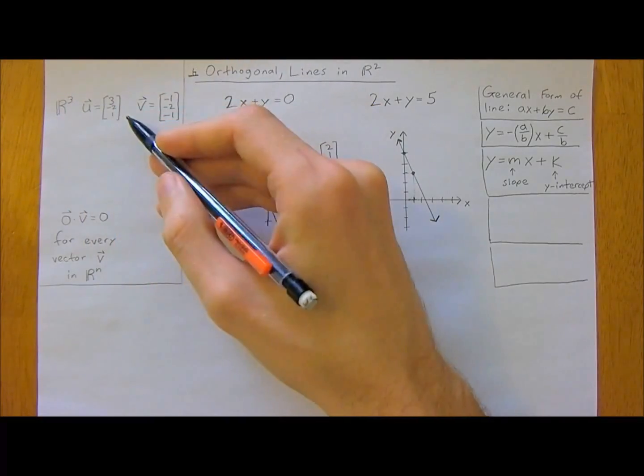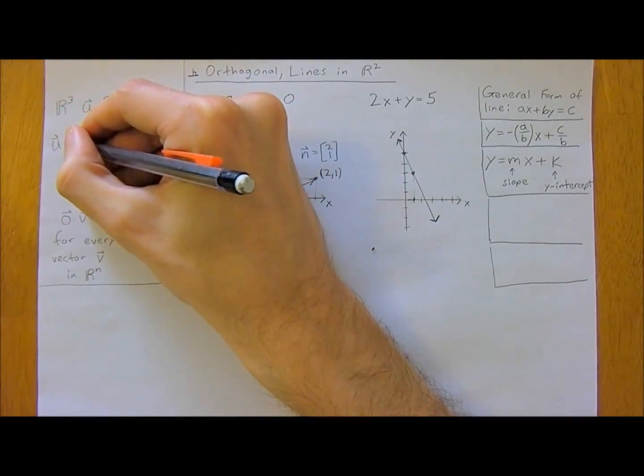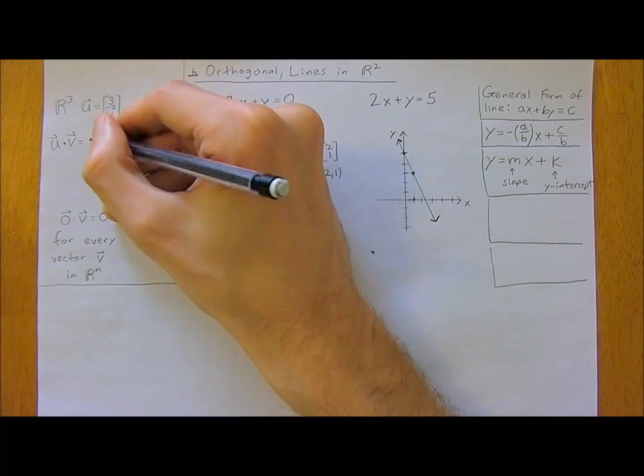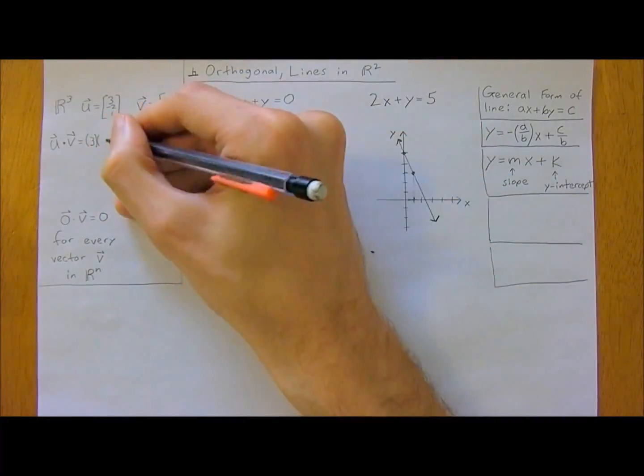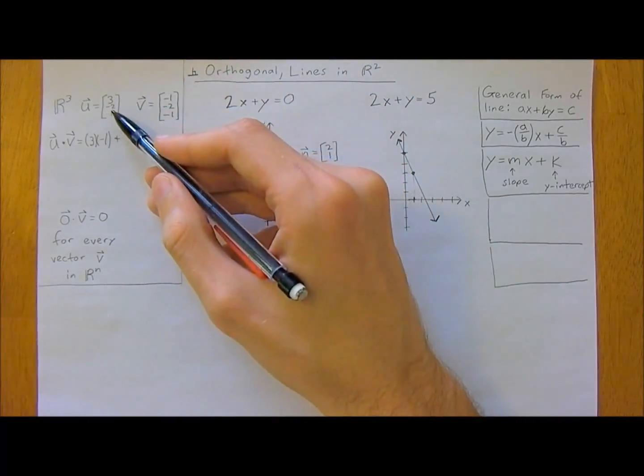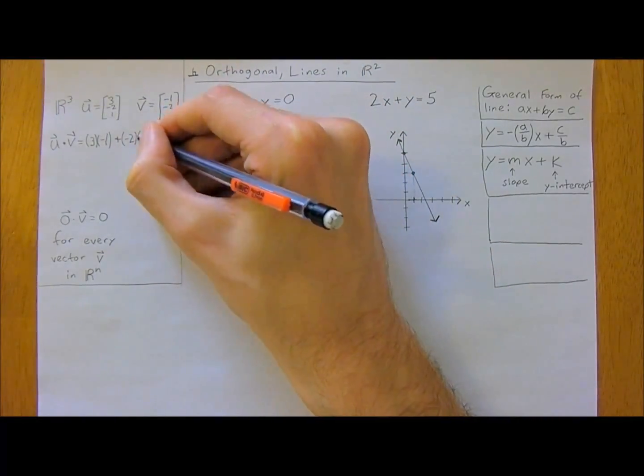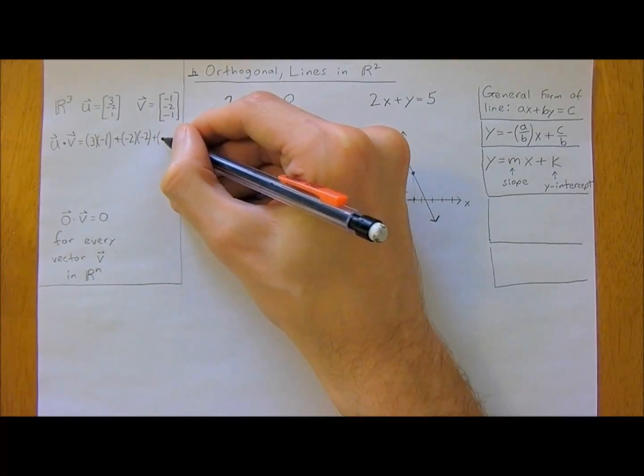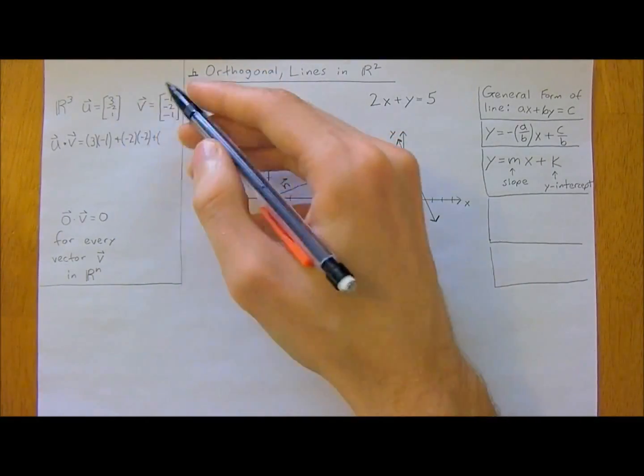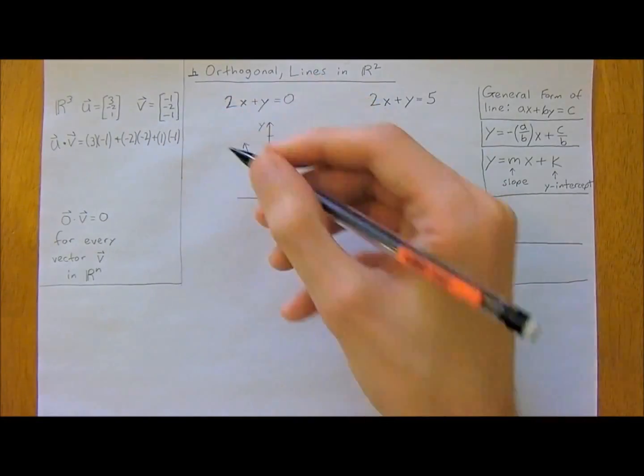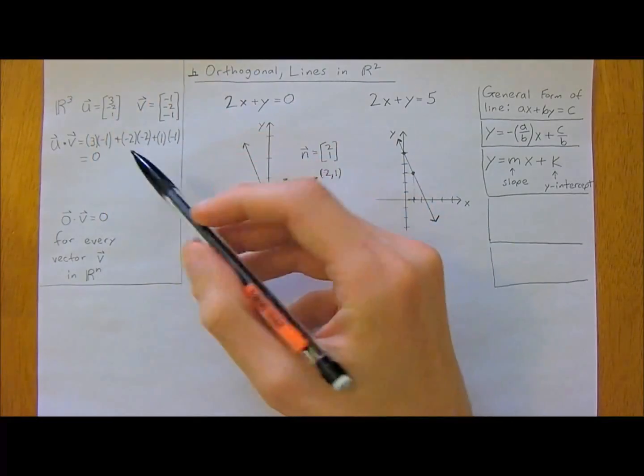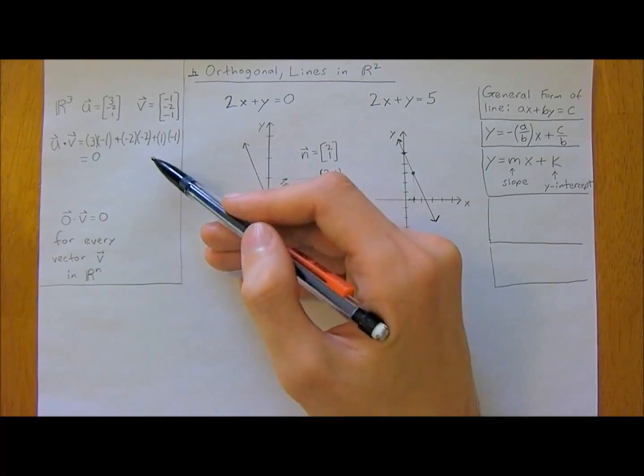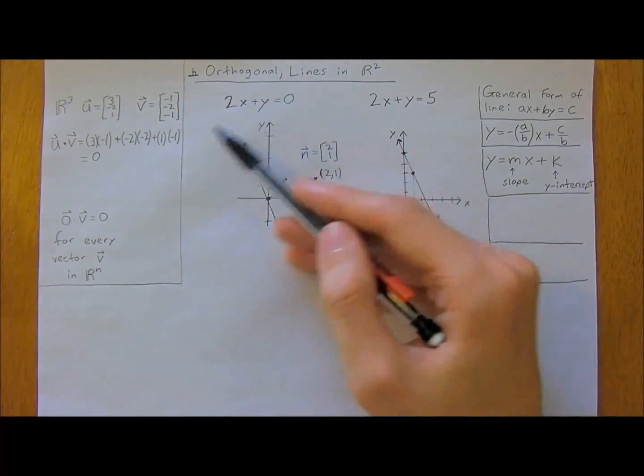If we take the dot product of u dot vector v, we just multiply the X components, so 3 times negative 1, and then we add that to the Y components, so plus negative 2 times negative 2, and we add that to the multiple of 1 times negative 1, the Z components. This is equal to 0, so negative 3 plus 4 minus 1 equals 0. Therefore, the vector u dot v is orthogonal to each other.